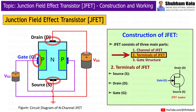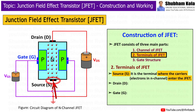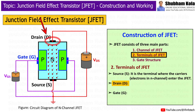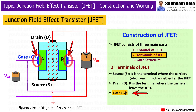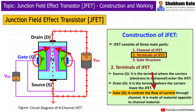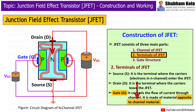A JFET has three terminals. First is Source, represented by S, where the carriers enter the JFET. Second is Drain, represented by D, where the carriers leave the JFET. Third is Gate, represented by G, which controls the flow of current through the channel. The gate is made of material opposite to the channel material — meaning that in an N-channel JFET, the gate is made of P-type material.